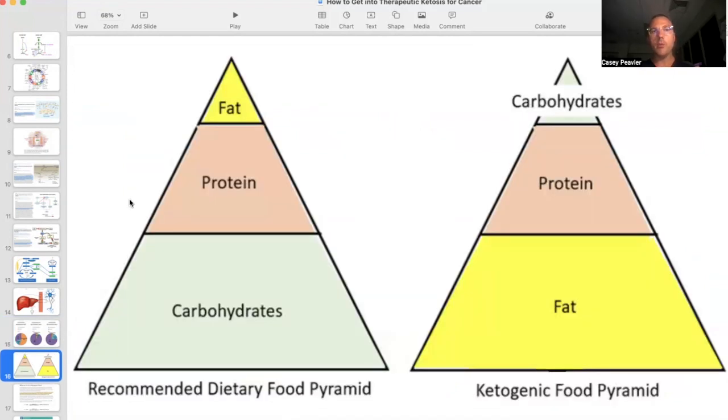And if you wanted to look at this on a food pyramid, we'd see that a normal food pyramid has all carbohydrates at the bottom, protein in the middle, and fat on top. And what we're basically doing is we're turning this on its head. We have fat at the bottom, protein in the middle, and carbohydrates at the top.